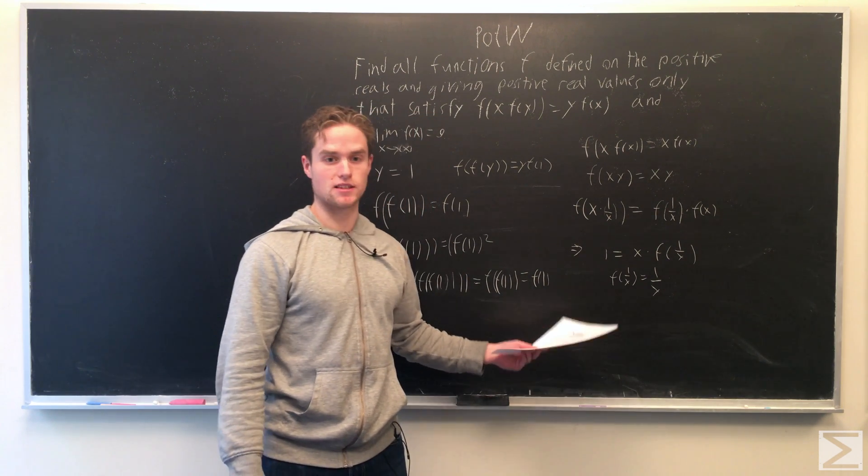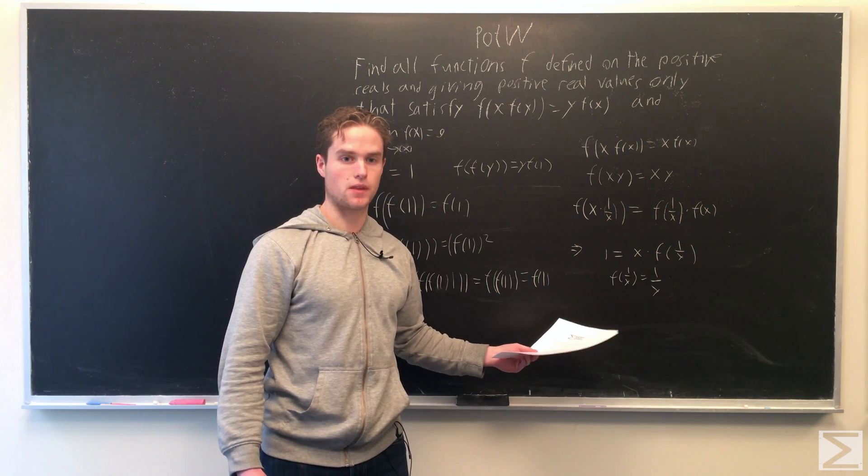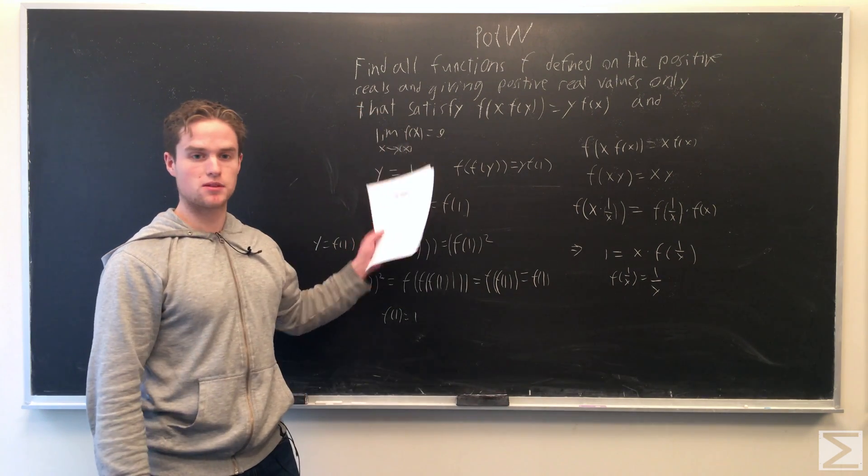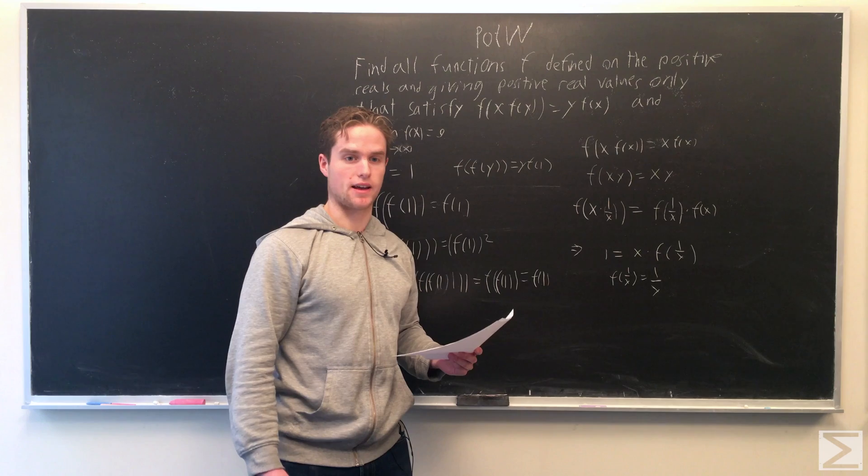And so now if x is less than 1, 1/x is greater than 1, and we have a fixed point greater than 1, which causes similar issues with this limit. So our only fixed point can be x = 1.